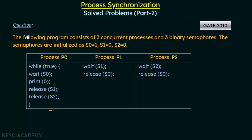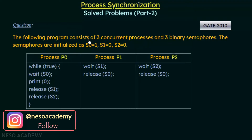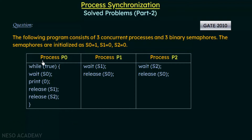The question says: the following program consists of three concurrent processes and three binary semaphores. The semaphores are initialized as S0 equal to 1, S1 equal to 0, and S2 equal to 0. We are given three processes P0, P1, and P2, and three binary semaphores S0, S1, and S2.